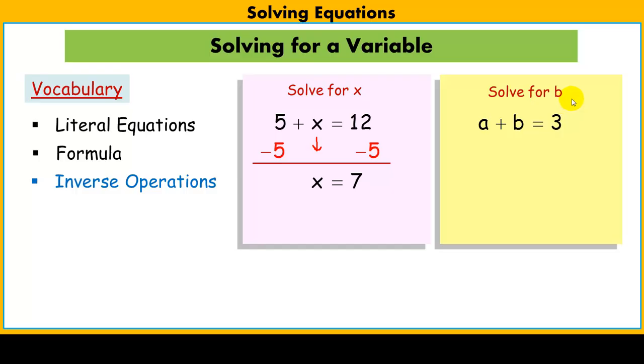We come over here to the literal equation and I want to get b alone. I have to get rid of this a. So of course, just like over here, I would subtract a from this side. But if I subtract a from this side, I have to do it to this side. a minus a is 0. This just comes along for the ride. But now, what do we have on this side? I can't add these two or subtract these two because they're not like terms. So, 3 minus a is just 3 minus a.